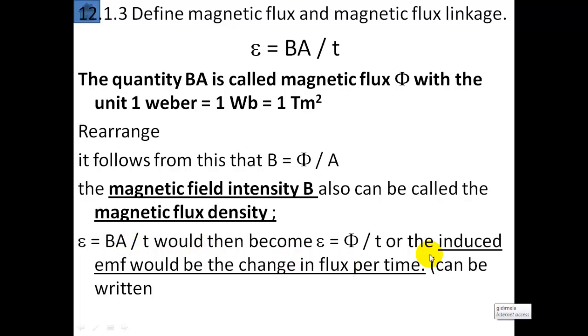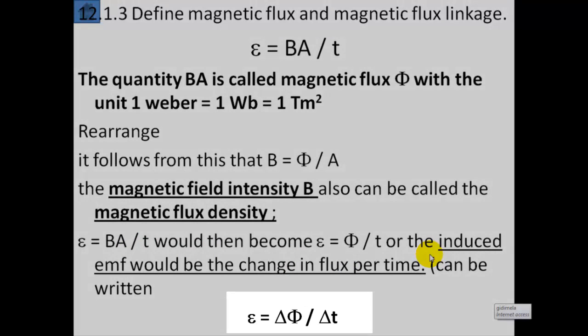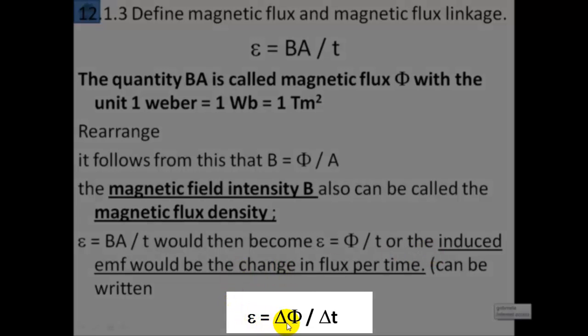The induced EMF would be the change in flux per time, and that can be written like this. So the EMF tells you how much flux is changing in a given period of time, or the rate of change of flux. The EMF will vary according to the rate of change of flux. Remember, flux, using the symbol phi, can also be written as BA. So it could be delta BA divided by delta t.